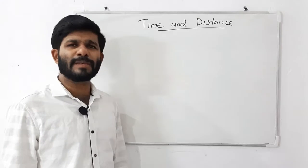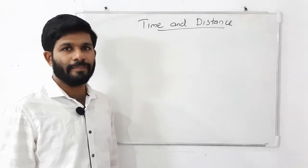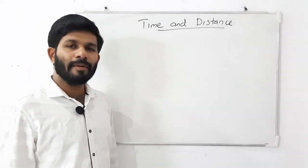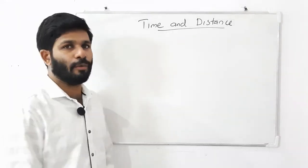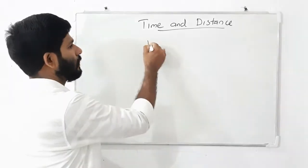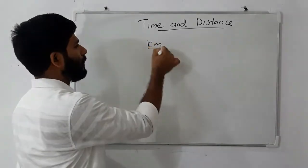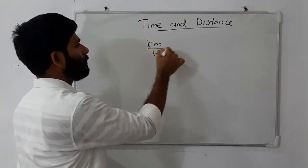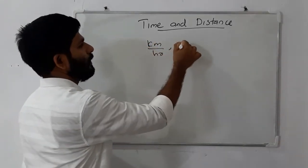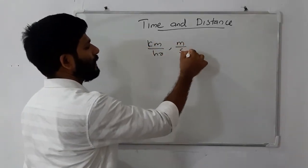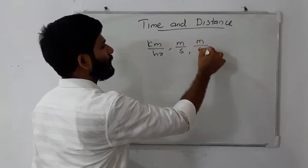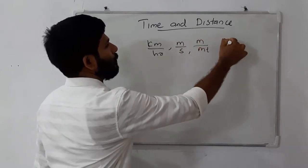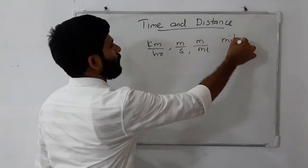That covers the speed units. If you look at the speed units: 1 km per hour, meters per second, meters per minute, and miles per hour.